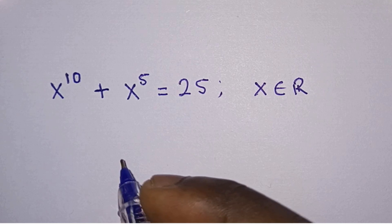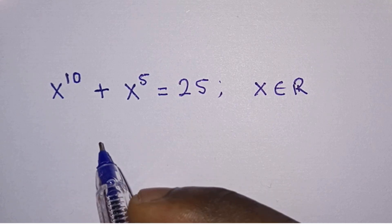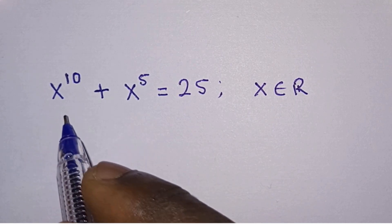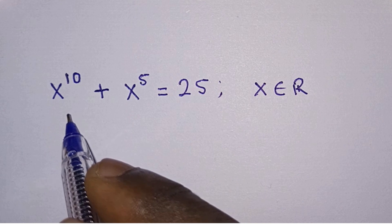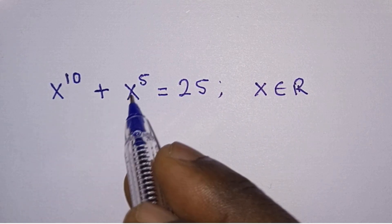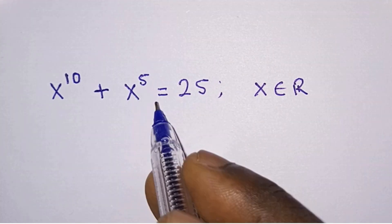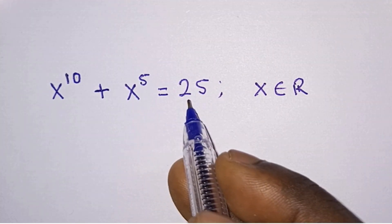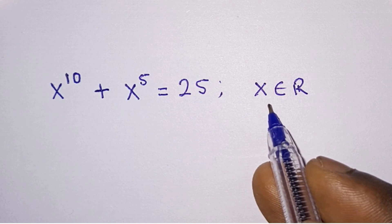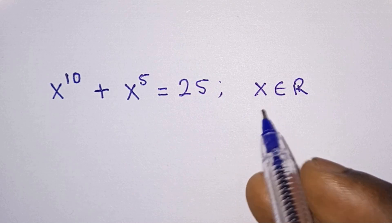Hello everyone. In this video we will solve for the value of x in this nice exponential equation. We have x to the power 10 plus x to the power 5 is equal to 25, where x is a real number.